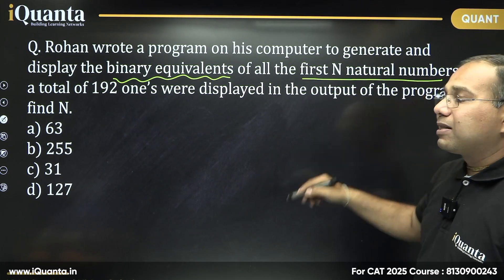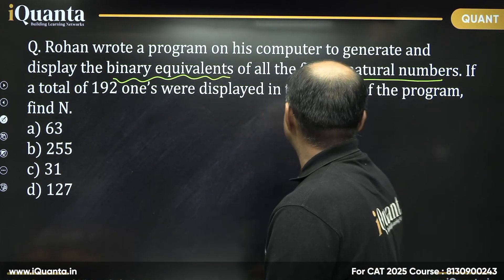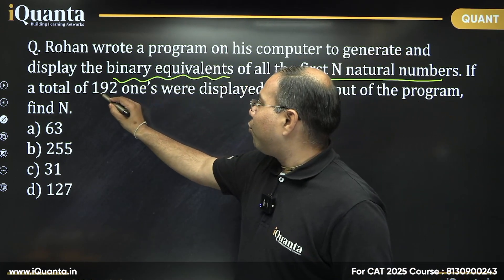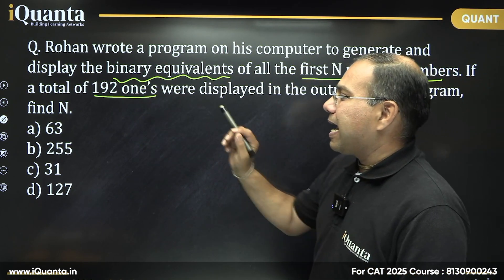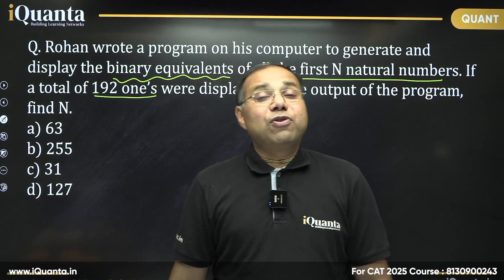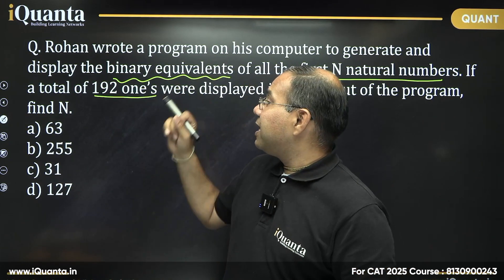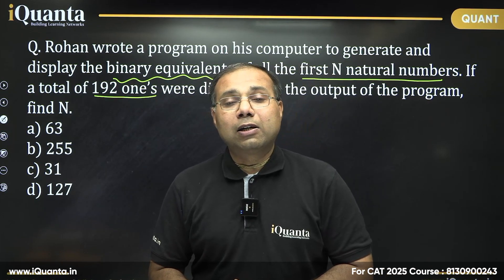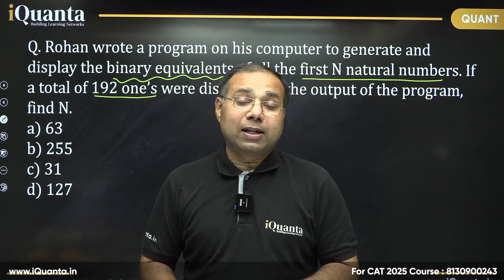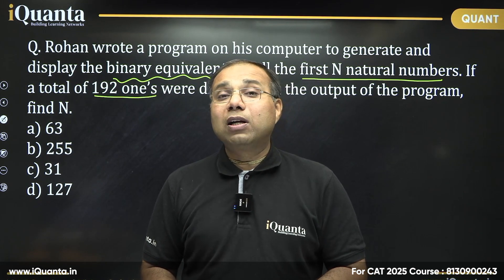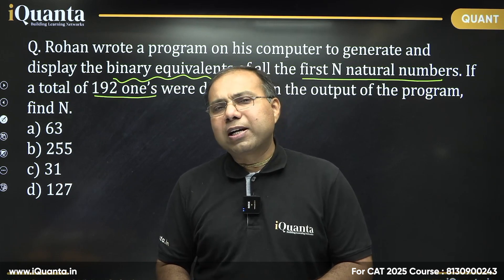Rohan is writing a program to display binary equivalents of the first n natural numbers — starting from 1, 2, 3 and so on up to a certain number. If a total of 192 ones were displayed in the output of the program, find n. Basically, we need to find out how many numbers he converted to binary, given that digit 1 was used exactly 192 times.